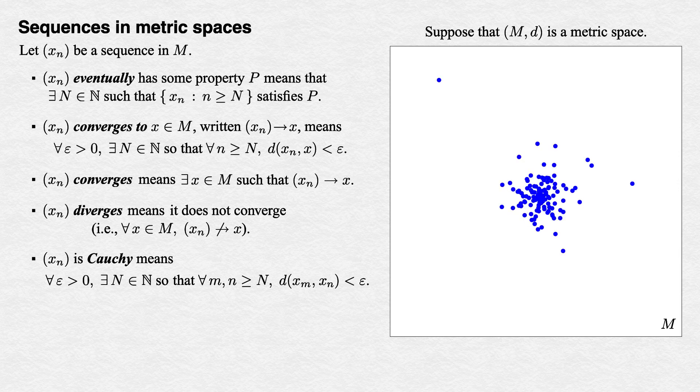The fact that we're making a statement about all of the possible distances between terms in the tail of our sequence makes it no surprise that we can also express this in terms of diameters. It's a fairly routine exercise to show that this is equivalent to the statement that the sequence of the tail's diameters converges to zero.